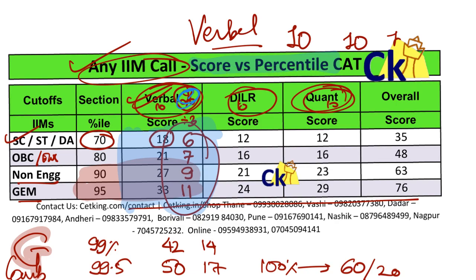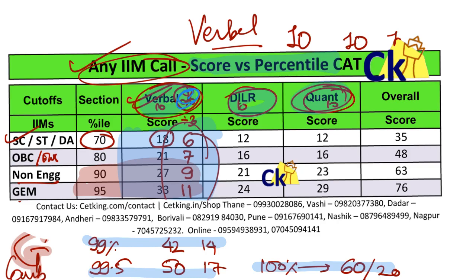The score versus percentile — I'll be making more videos like this for DLR and quant as well. In case you want to join our program, call the numbers given here so my team can help you with books, mocks, shortcuts, or whichever program you want to join. Keep one target in mind — whether it's 99, 99.5, 100, 95, 90, 80, or 70 percentile — or at minimum, this much score is required to get the IIM call. All the best!